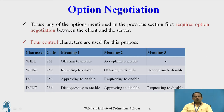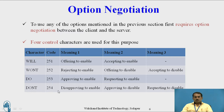The four characters are: WILL (code 251) — offering to enable, and accepting to enable; WON'T (code 252) — rejecting to enable, offering to disable, and accepting to disable the connection; DO (code 253) — approving to enable, requesting to enable; DON'T (code 254) — disapproving to enable, disapproving to disable, and requesting to disable.